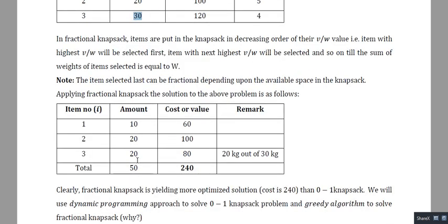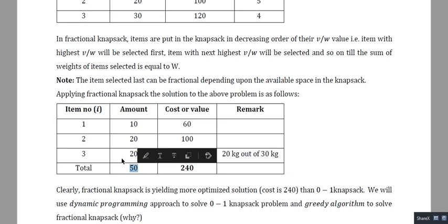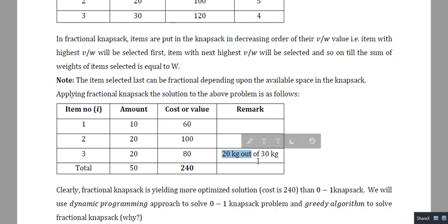Now we try to add item 3 (30 kg). Adding all 30 kg would bring total weight to 60 kg, exceeding 50 kg. So we only take 20 kg of item 3. If 30 kg of item 3 costs 120 rupees, then 20 kg costs 80 rupees. Total weight: 50 kg; total cost: 60 + 100 + 80 = 240 rupees. We selected only 20 kg out of 30 kg of item 3.